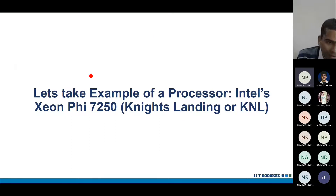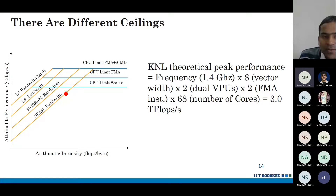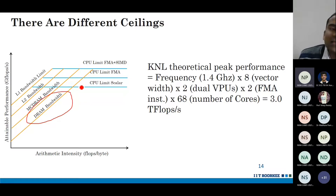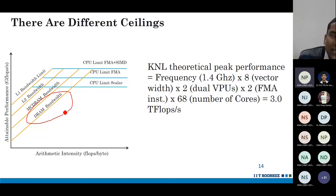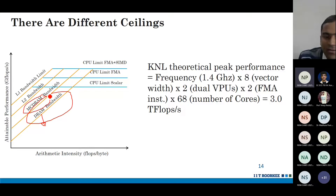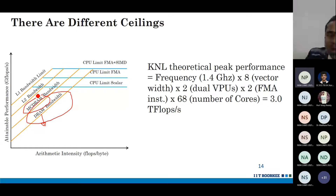Now let us take some numbers using Intel's Xeon Phi processor example, which is Knights Landing (KNL). Until now we have only talked about DRAM, but in a processor we don't have just one level of cache — we have a whole memory hierarchy. This is the roofline model if data is available in MCDRAM. MCDRAM is something like an L3 cache, or it can be part of cache or memory — called near memory or far memory.